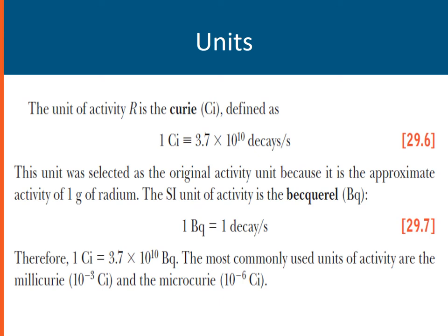Let's talk about the units that will be used for the computations and quantities in this concept. The unit of activity R is actually expressed in curie, which is symbolized Ci. One curie is equal to 3.7 times 10 to the 10 decays per second. The unit was selected as the original activity unit because it is the approximate unit of 1 gram of radium.